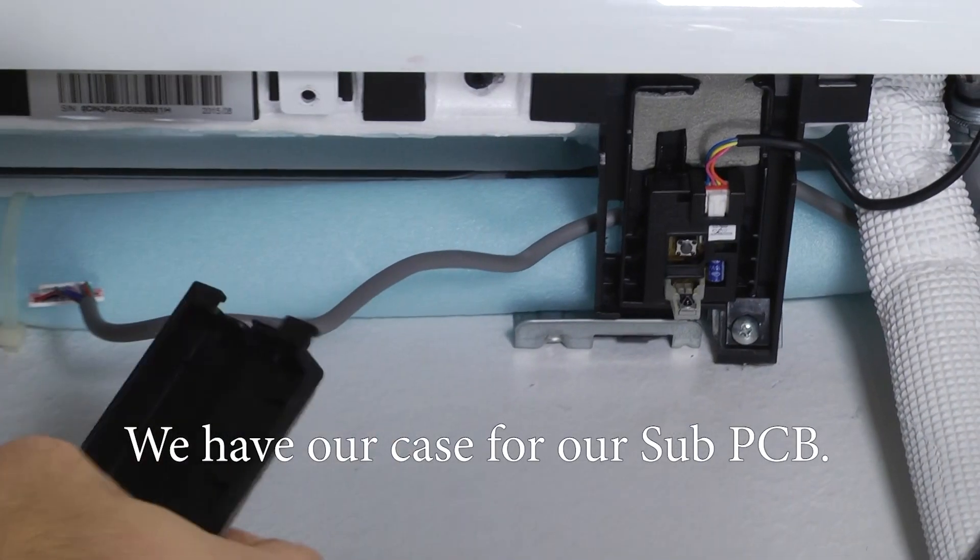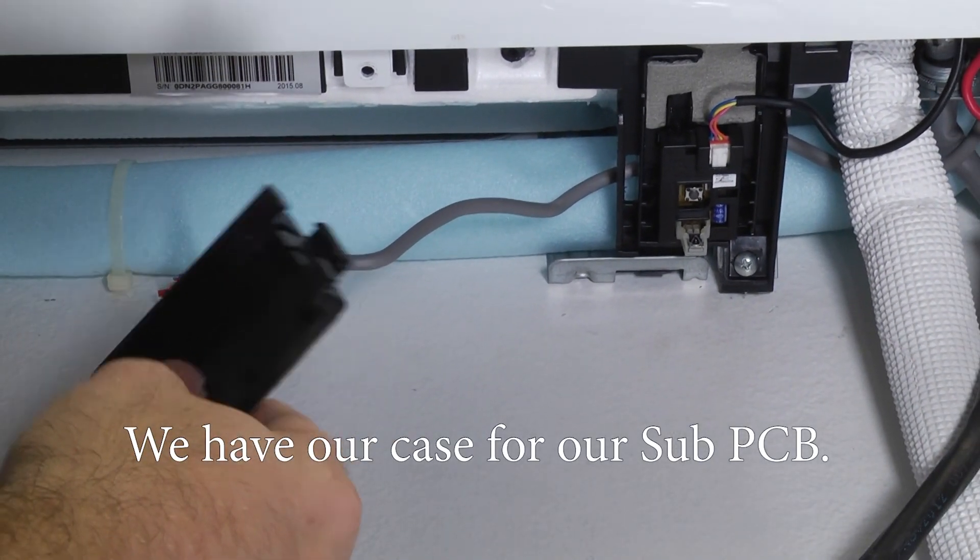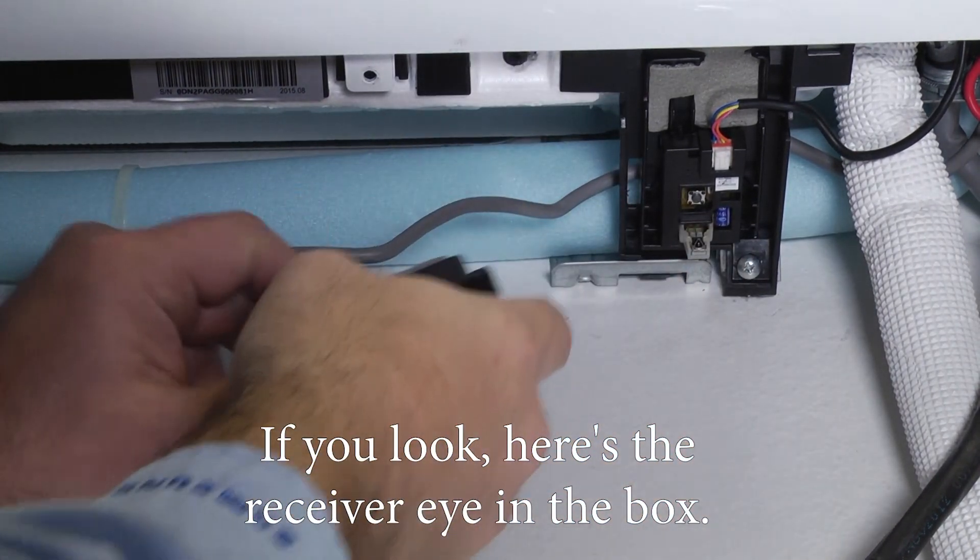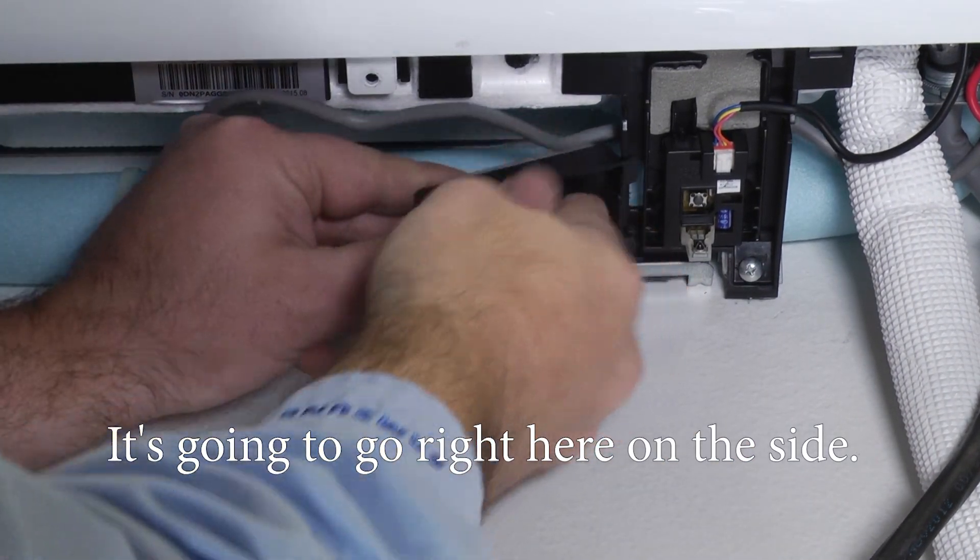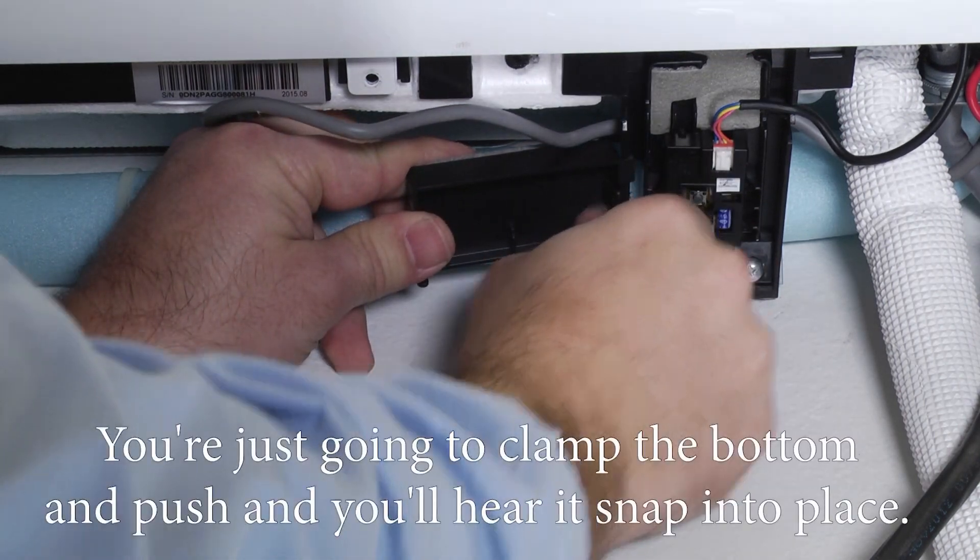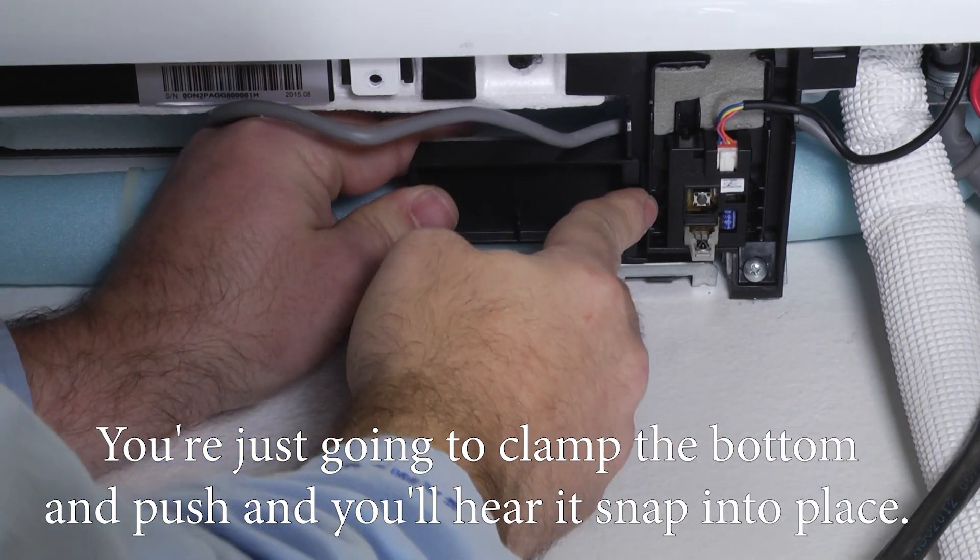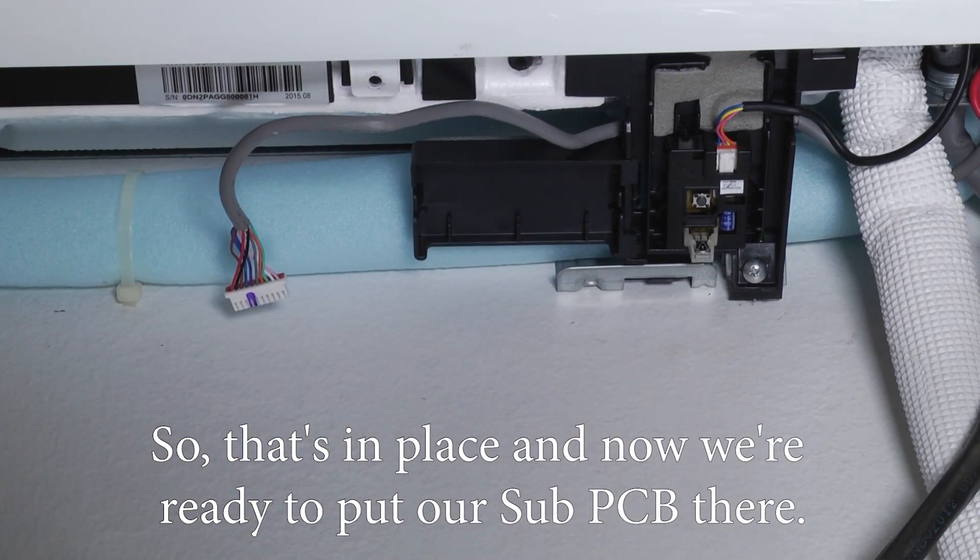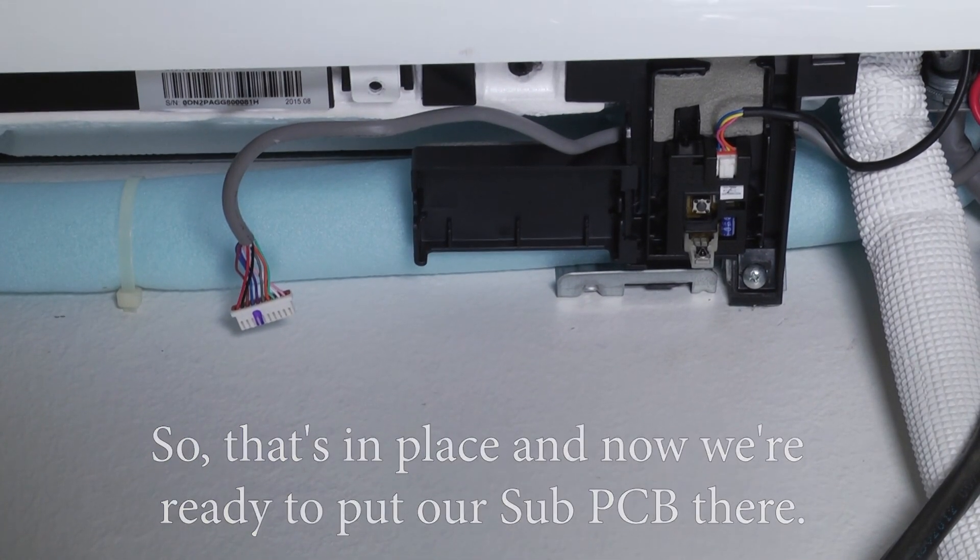And we have our case for our sub PCB. If you look, here's the receiver eye in the box. It's going to go right here on the side. You're just going to clamp the bottom and push and you'll hear it snap into place. So that's in place. Now we're ready to put our sub PCB there.